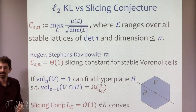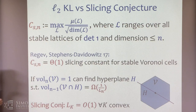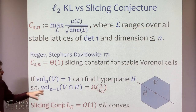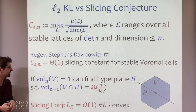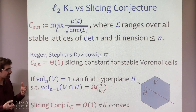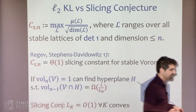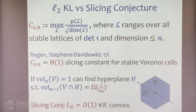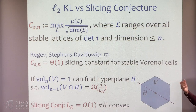If you restrict Bourgain's slicing conjecture to Voronoi cells of stable lattices and look at the worst-case slicing constant you get for that, it's equivalent — up to theta of one — to the Kannan-Lovász constant for stable lattices. So resolving the slicing conjecture would at least up to a constant resolve Barak's conjecture. The reverse Minkowski constant, essentially introduced by Noah in the first talk, asks: how much do I have to scale a stable lattice so that its Gaussian mass is less than two? I conjectured with Oded that it was polylogarithmic in dimension, and then Noah and Oded proved it.